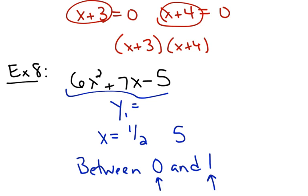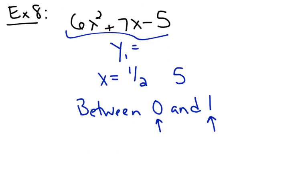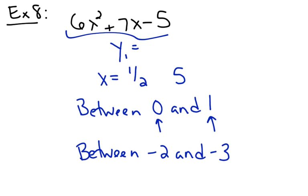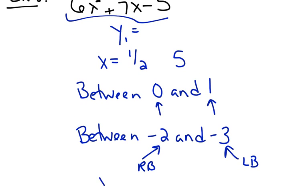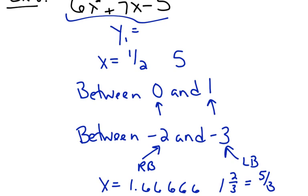The other place where the graph hits the x-axis is between negative 2 and negative 3. So go back to second trace, number 2. Negative 3 is your left bound because it's further to the left on the number line, so when it says left bound, type in negative 3 and hit enter. Type in negative 2 for the right bound and hit enter, then hit enter a third time. It tells you that it's negative 1.666-repeating. What's 0.6 repeating? That's 2 thirds. So 1 and 2 thirds is 5 thirds — and it said negative — so negative 5 thirds.